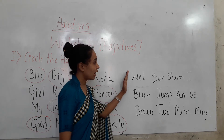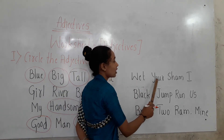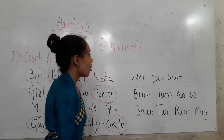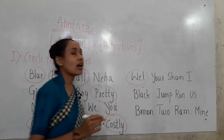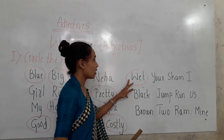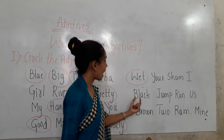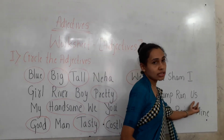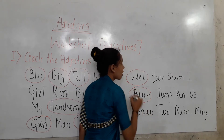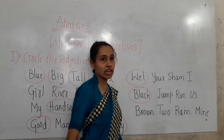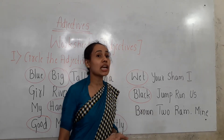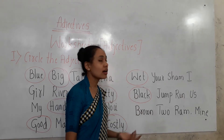Look at these words: wet, your, Sham, are. Wet is the adjective here — 'wet clothes,' so wet is showing the quality of the clothes. Then we have black, jump, run, us. Black is the adjective — 'I am wearing a black dress,' so black is describing the color of the dress.